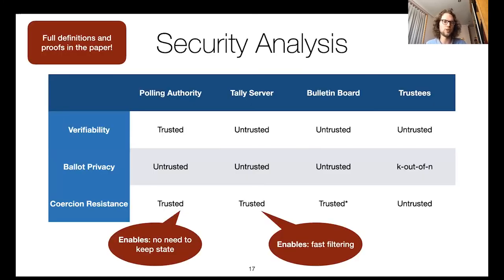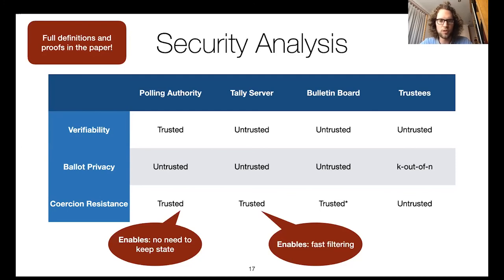For the security analysis: for verifiability, we only need to trust the polling authority, which makes sense because the polling authority determines who gets to vote. For ballot privacy, we only need to trust the trustees, as they handle the encrypted candidates. With respect to coercion resistance, we need slightly stronger assumptions. To prevent voters from having to keep state, they authenticate every time to the polling authority, so the polling authority must be trusted for coercion resistance. We also trust the tally server to enable fast filtering, and the bulletin board, unless an anonymous communication system is used. Full definitions and proofs are in the paper.